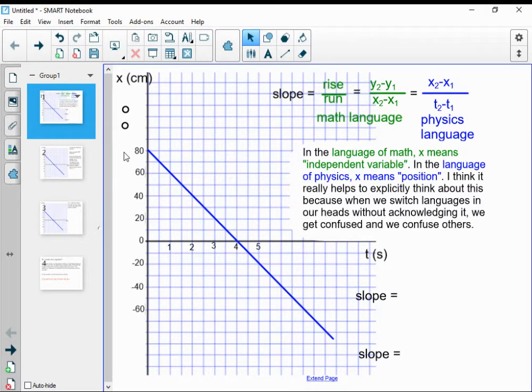This brings up an important point about the language of math versus the language of physics. In math, x is whatever's going on your horizontal axis, the independent variable. But in the language of physics, I'm using x to represent position. And since position is my dependent variable here, I end up putting x on this vertical axis. That could be really confusing. The problem with asking why did you put x on the y axis is that I switched language halfway through the sentence. I was talking about x in terms of position, and then y in terms of math language.